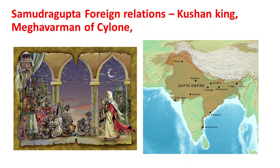Later he started expeditions in the east and west frontier states and conquered them. When Samudragupta had conquered the whole of the Indian subcontinent, the neighboring kingdoms and empires started diplomatic relationships with him. The Kushan king of Central Asia established a foreign diplomatic relationship with Samudragupta. The Persian king also established a diplomatic relationship with him, as did the ruler of Sailun, which is now called Sri Lanka.